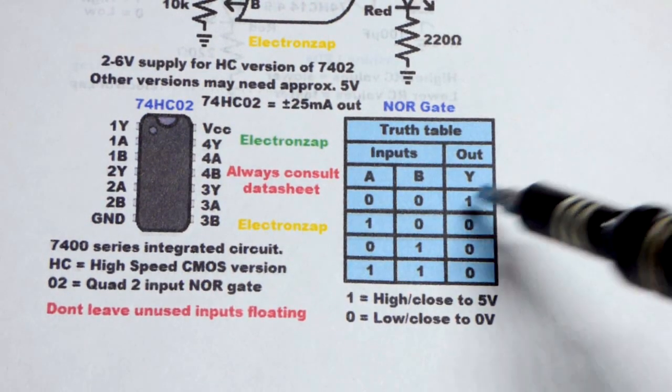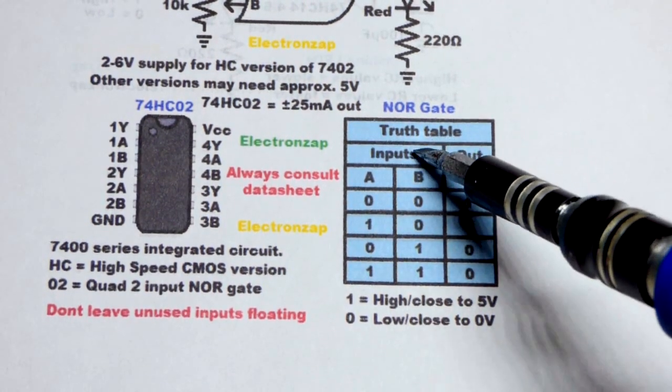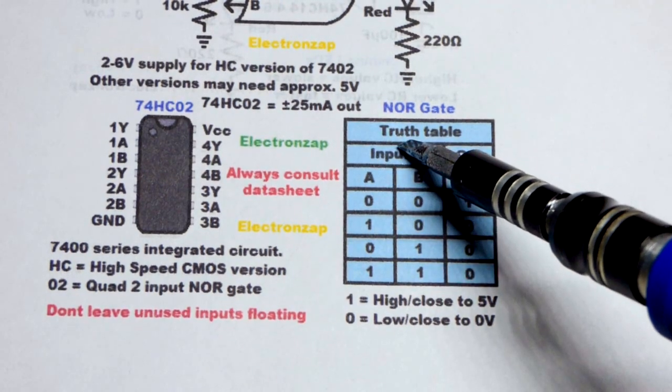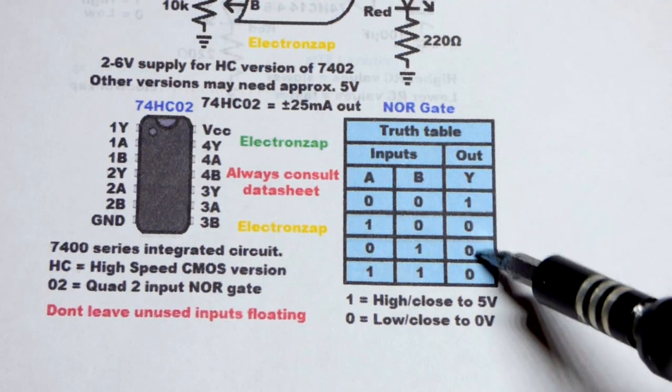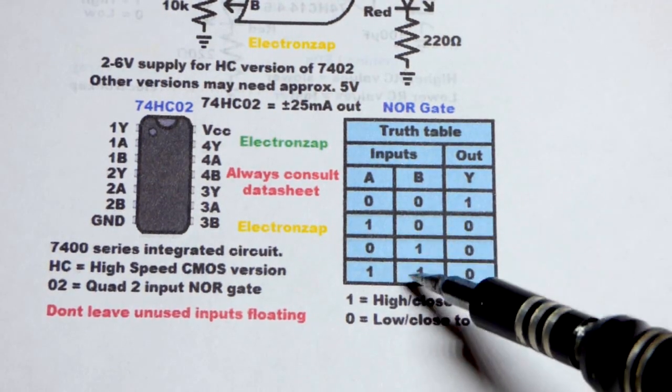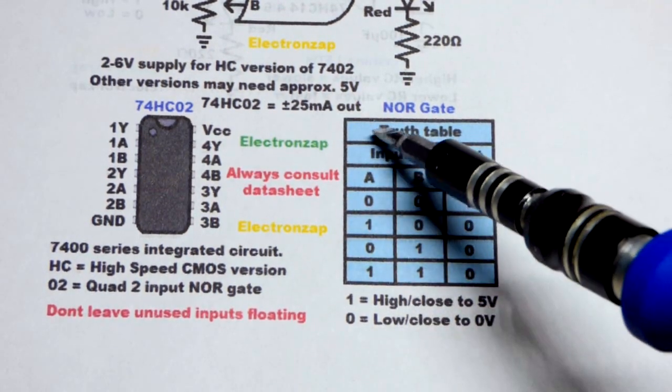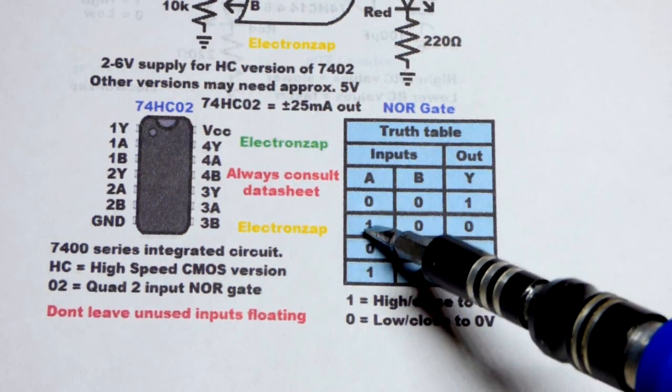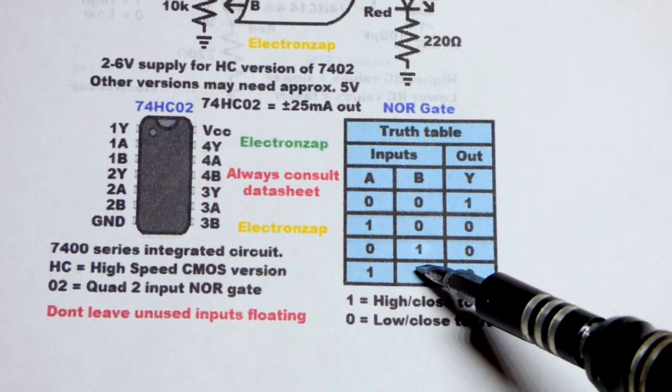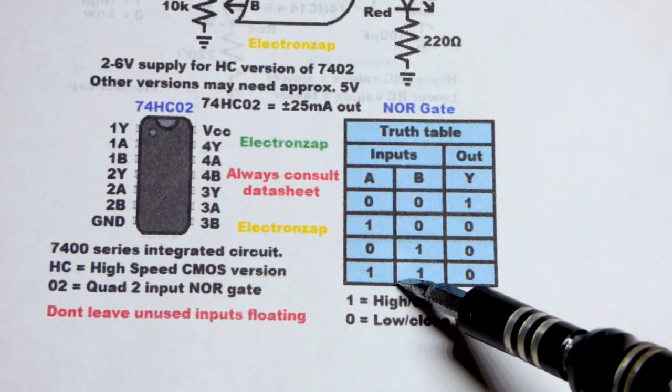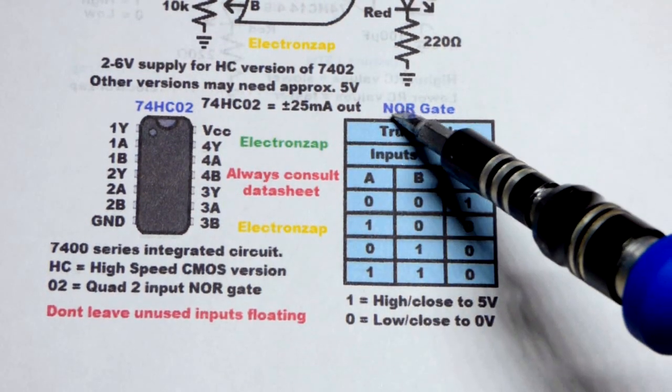So here we have a truth table, which you want to look up for any logic gate that you are not familiar with. So we have the A and B inputs, and then the output Y, right there. So an OR gate, instead of NOR, an OR gate, if one, the other in this case, since there's two inputs, or all of the inputs are high, then the output would be high.